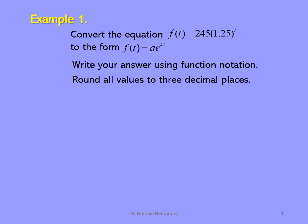Hi everyone. The best way to convert exponential growth to continuous exponential growth. We have given function f of t equals 245 times 1.25 to the power of t. We have to convert it to f of t equals a times e to the power of kt.